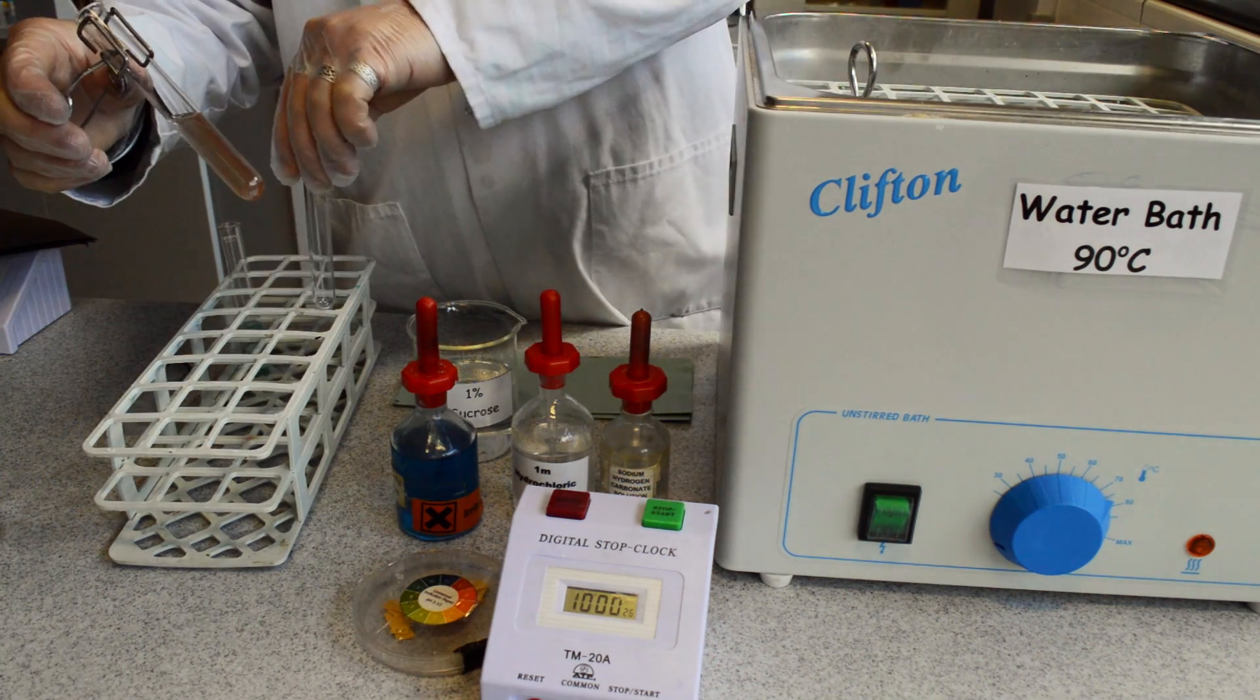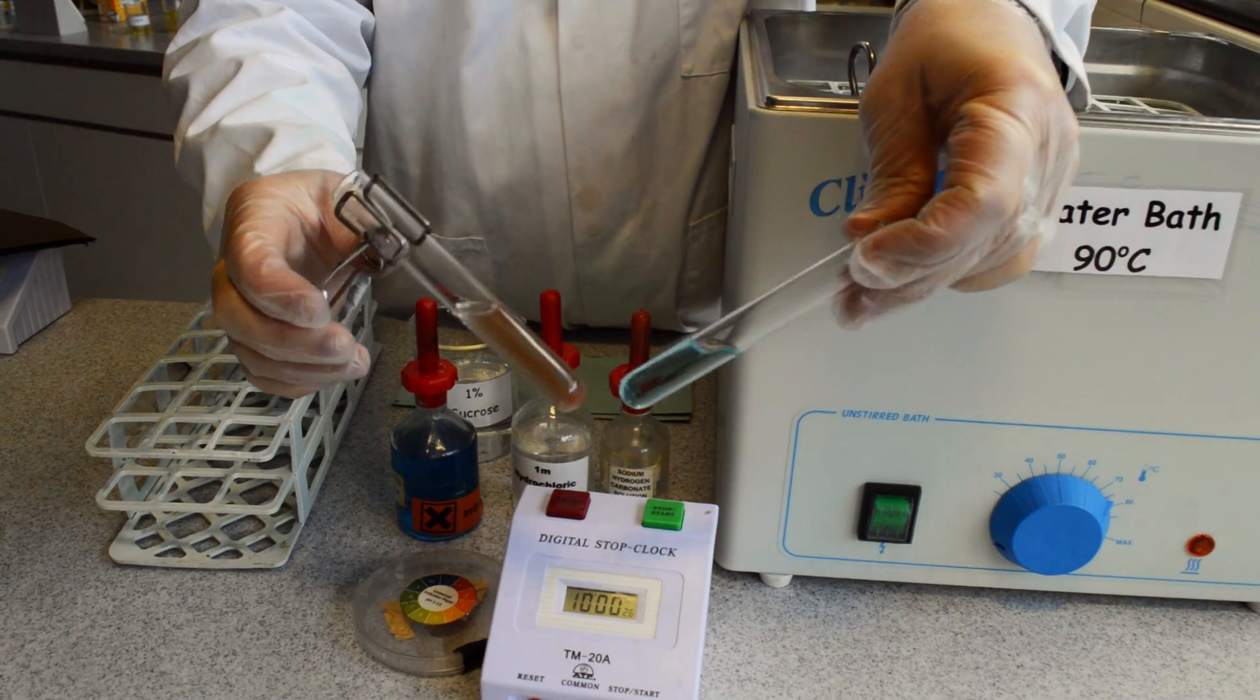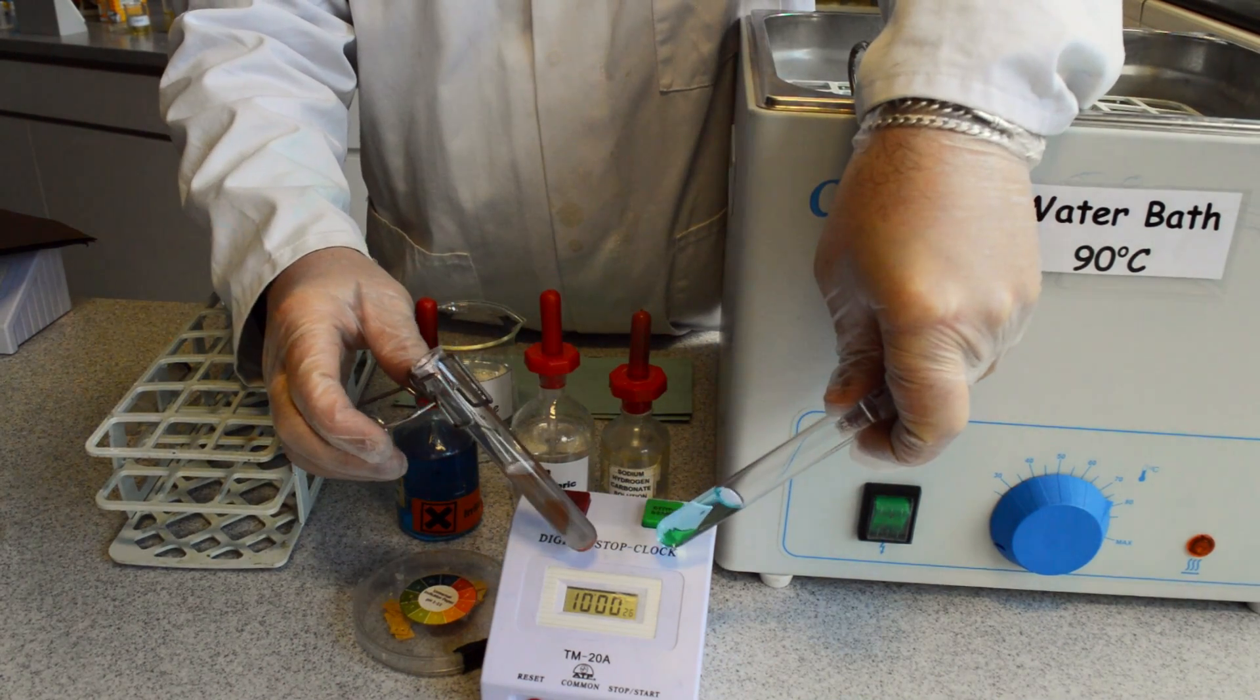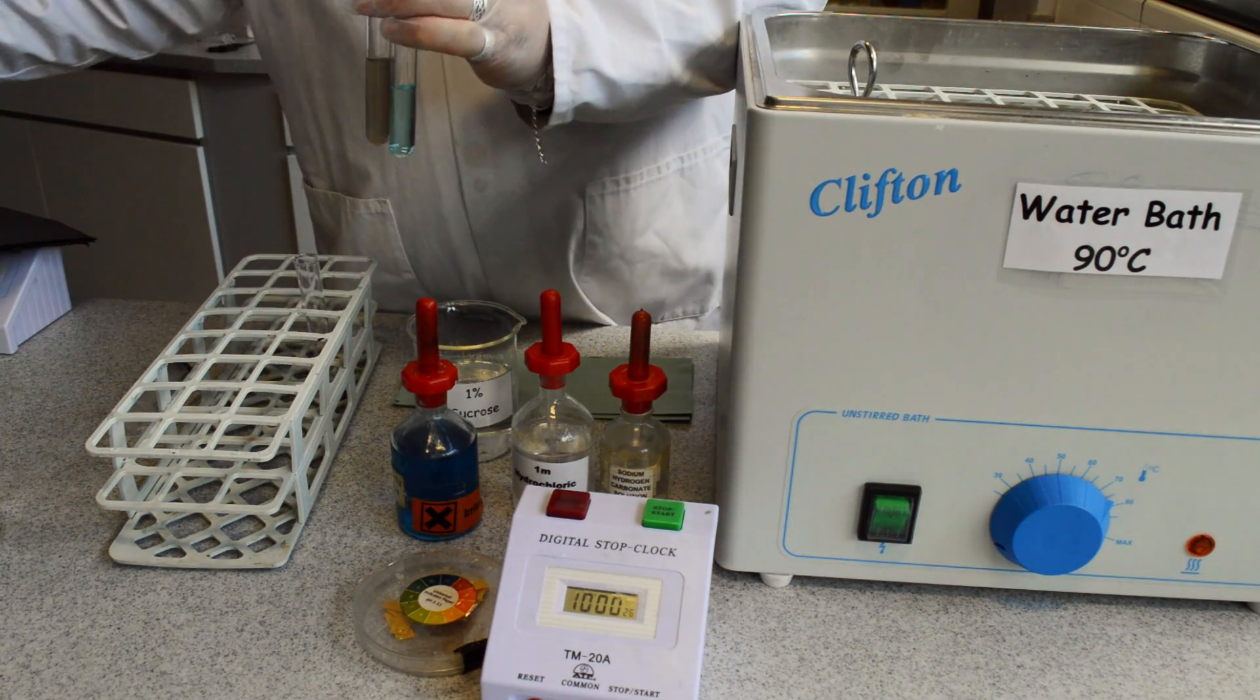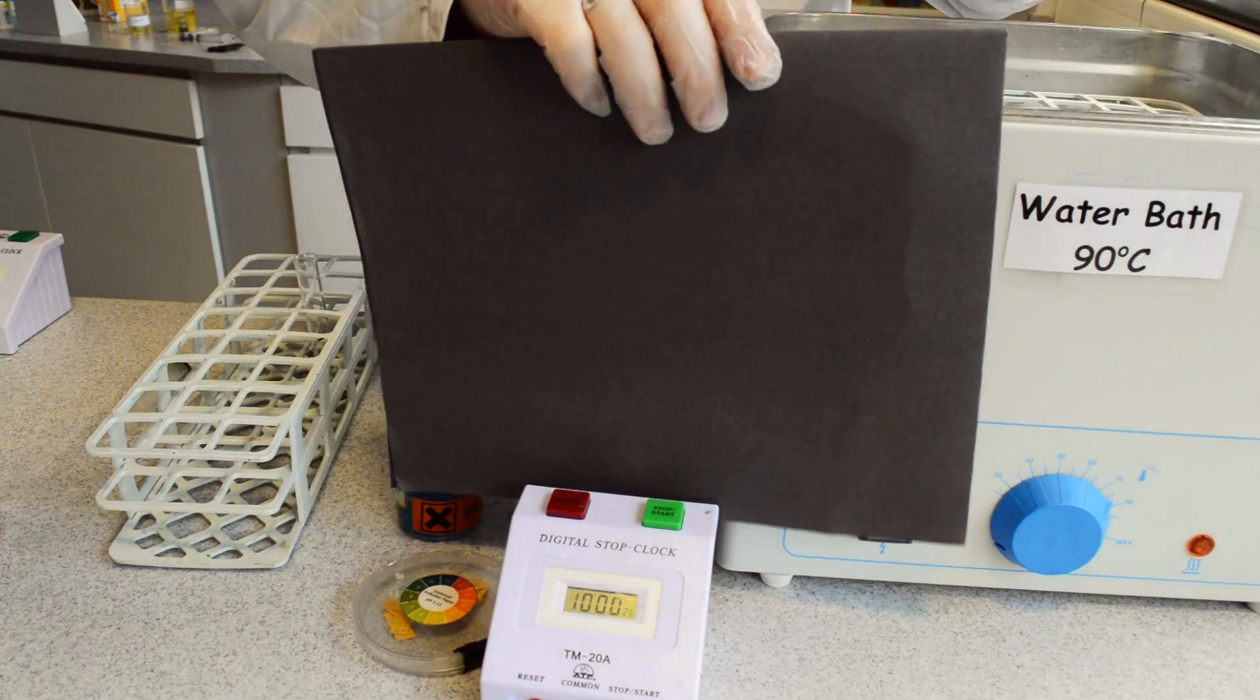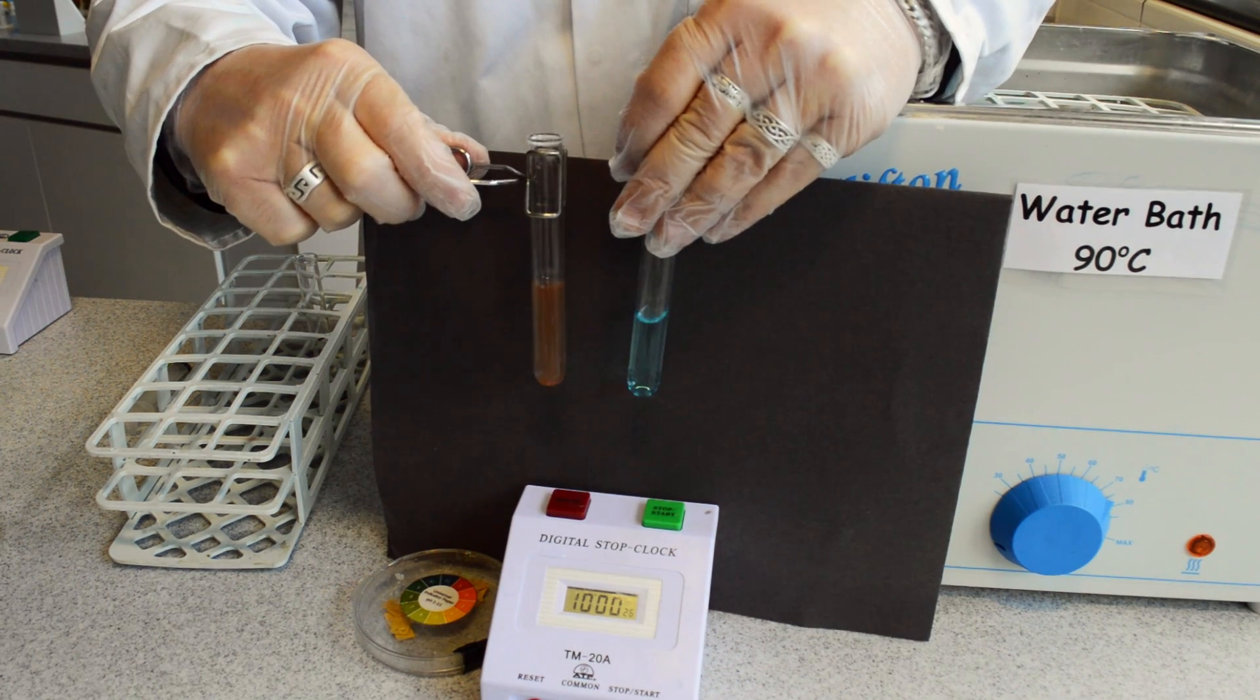Get the right tube. The Benedict's reagent changes from a blue colour to produce a brick red or orange precipitate.